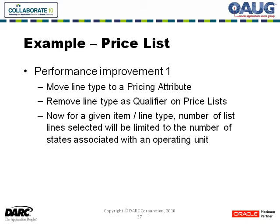The first thing we did, recognizing that the qualifiers we had all represented AND conditions, was to move line type — which represented rate type — to a pricing attribute.